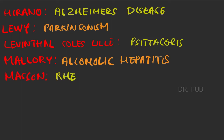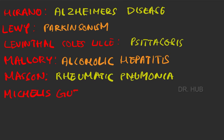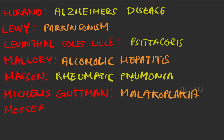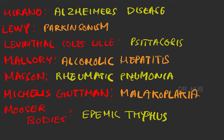Masson bodies in rheumatic pneumonia. Then Michaelis-Gutmann bodies in malacoplasia. Mosso bodies present in endemic typhus.